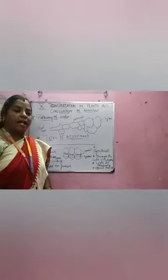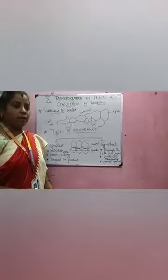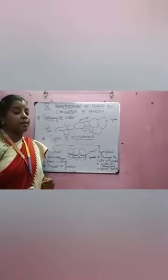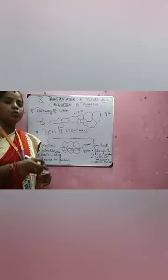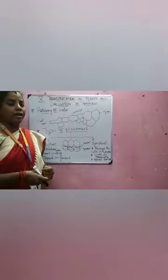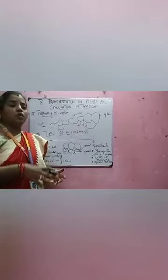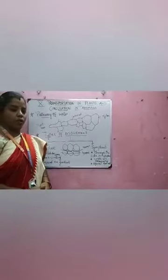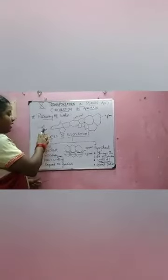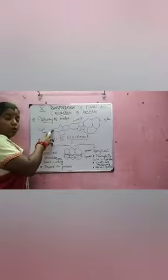Now we have to see the pathway of water. First, the pathway begins at the root hair. We already know from the previous video, we discussed the structures and zones of the root. When you see the root, we have three zones: the meristematic zone, elongation zone, and maturation zone. Root hairs are present in the root, and water is absorbed by the root through the root hairs.